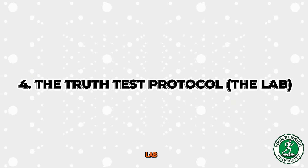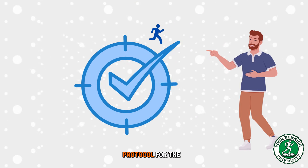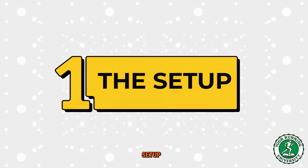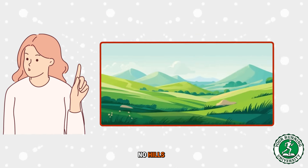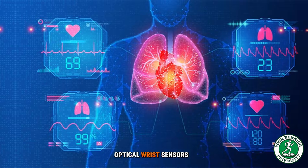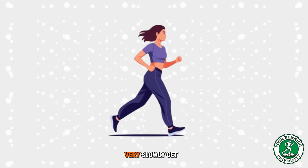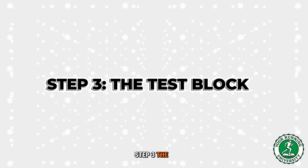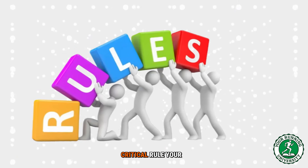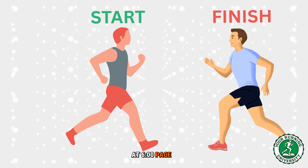The truth test protocol — the lab. Now that you've seen the ugly truth on your phone, we need to measure it accurately to fix it. Here is the exact protocol — do not deviate. Step 1, the setup: choose a completely flat route, no hills. Hills ruin the data because they spike HR artificially. Wear a chest strap monitor — optical wrist sensors are often inaccurate for this specific test. Step 2, the warm-up: run 15 minutes very slowly to get the system online. Step 3, the test block: hit the lap button on your watch and run for exactly 60 minutes at a steady zone 2 effort. Critical rule — your pace must remain dead steady. Do not speed up, do not slow down. If you start at 6-minute pace, you finish at 6-minute pace.